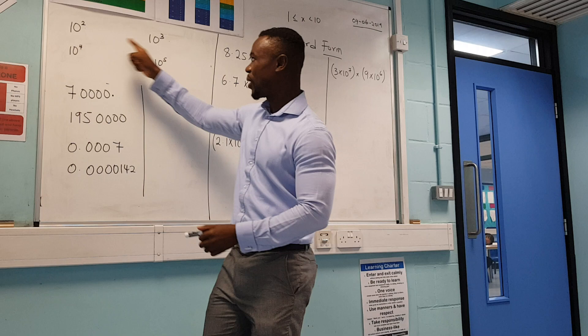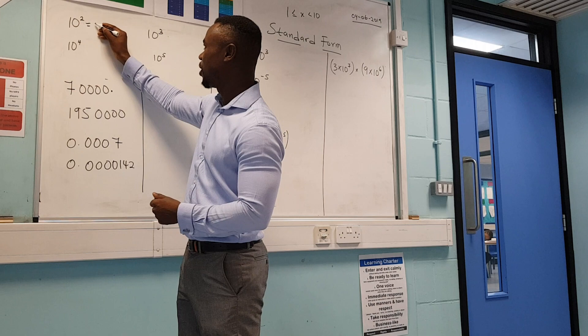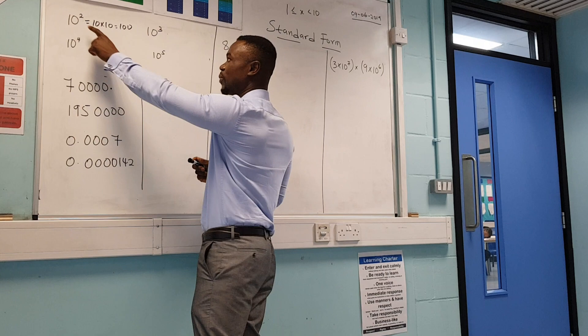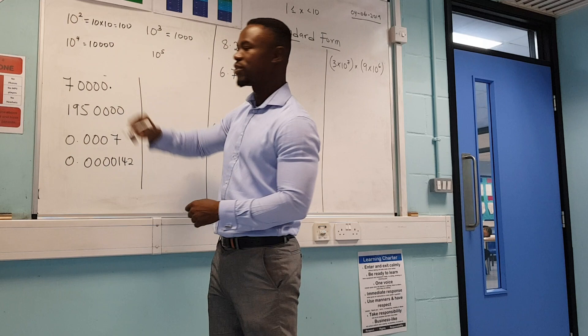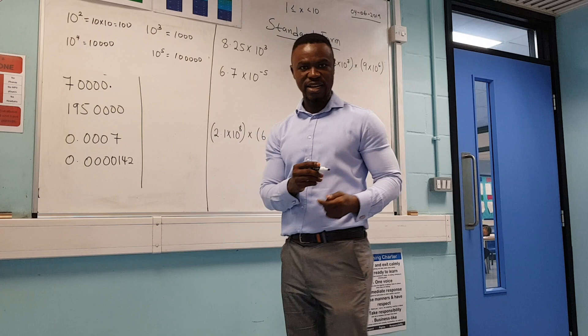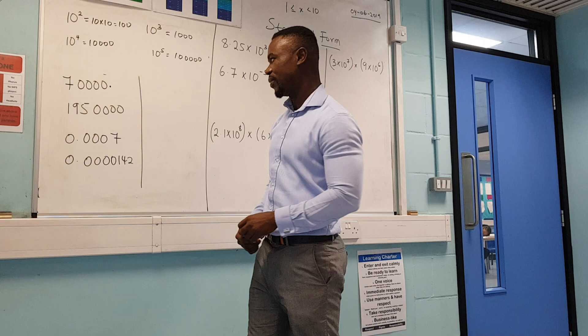When we say the powers of 10, this is what I mean: if I have 10 to the power of 2, it means 10 times 10, which is 100. The small number on top tells you how many zeros you need. So 10 to the power of 3 means a thousand, 10 to the power of 4 means 10,000, and 10 to the power of 5 means a hundred thousand.